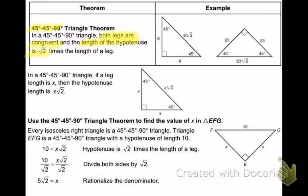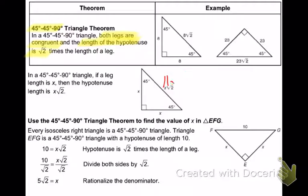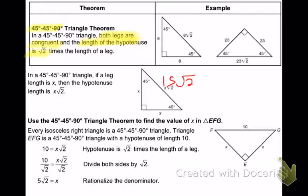If the legs are 12 and 12, the hypotenuse is 12 square root of 2. Now let's try it the other way. What if the hypotenuse is 11 square root of 2? Both legs are going to be 11. What if the hypotenuse is 15 square root of 2? The two legs are going to be 15.